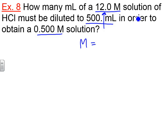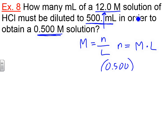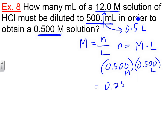Remember, molarity is moles over liters, so we'll solve for moles: moles = molarity × liters. Our new molarity is 0.5, and 500 mL is how much we want, which is 0.5 liters. So this is simply 0.5 × 0.5, which gets you 0.25 moles. Our dilute solution contains 0.25 moles.